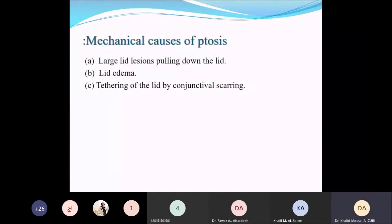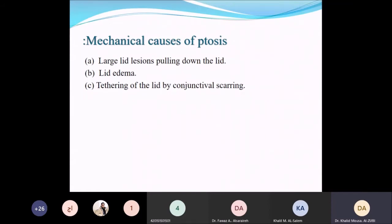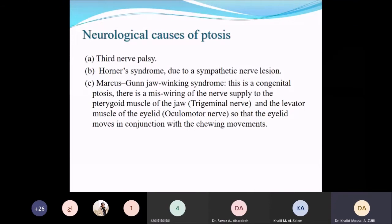Mechanical causes of ptosis include large lid lesions pulling down the eyelid, lid edema, or tethering of the lid by conjunctival scarring (cicatricial causes). Neurological causes include third nerve palsy or Horner syndrome due to sympathetic nerve lesion — in Horner syndrome there is mild ptosis of about 2 mm due to Müller's muscle dysfunction. Marcus Gunn jaw-winking syndrome is another neurological cause.